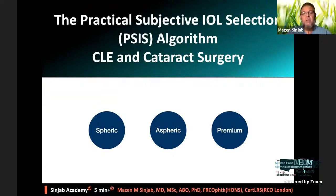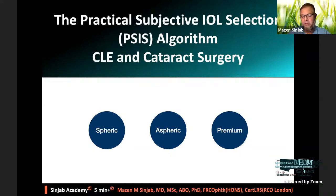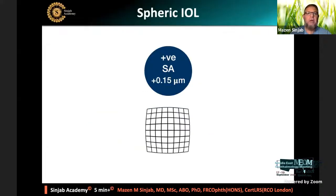There are three types of intraocular lenses used during cataract surgery or lens-based refractive surgery: spheric, which is the old type; aspheric; and premium lenses. The spheric lens provides, by default, positive spherical aberration of around plus 0.15 microns. There are three types of aspheric IOLs in the market: those that provide zero spherical aberration, those providing negative spherical aberration of minus 0.20 microns, and those providing minus 0.27 microns — regardless of the power of the lens.